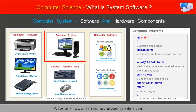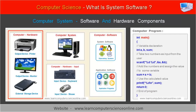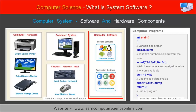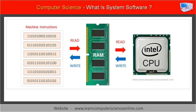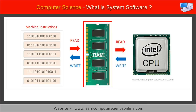The computer system consists of both hardware components and software components. A software is essentially a computer program that consists of a set of program instructions. These program instructions are loaded into the main memory of the computer to start the program execution.